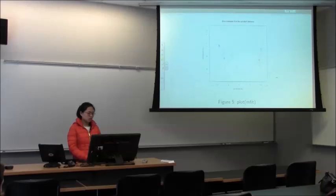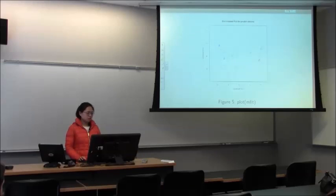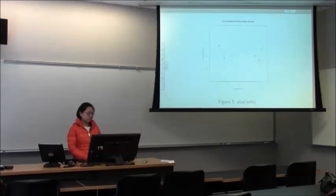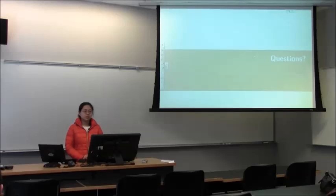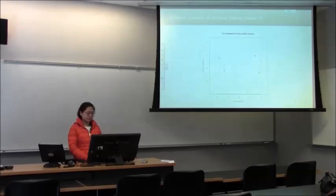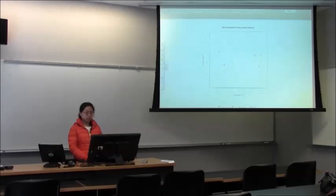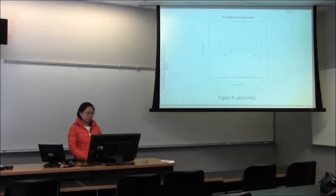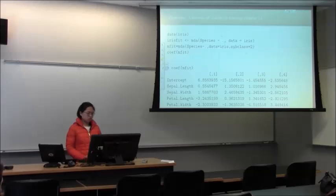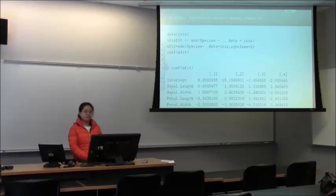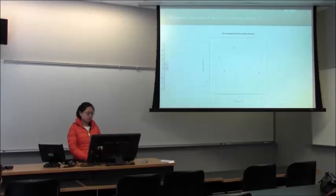The result on the same dataset now has each class with two centers. An audience member asks whether the MDA function automatically selects the number of centers in each group or whether it is user-specified, and whether the number of subclasses must be the same in each group. The presenter confirms it must be the same and acknowledges uncertainty about whether that is always reasonable.